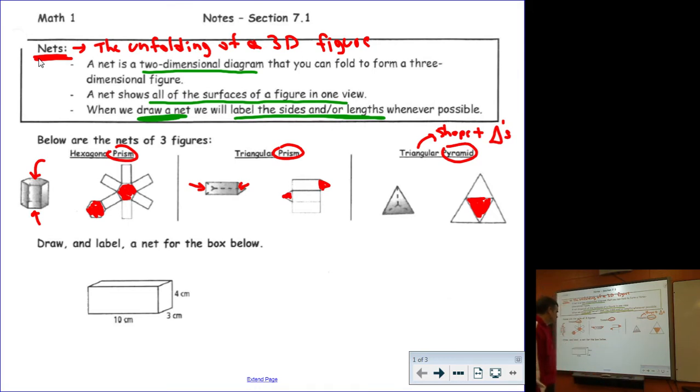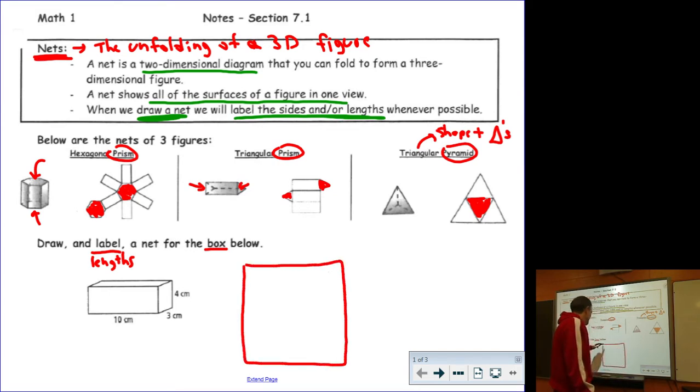We're going to draw a net for a box, which is really just a rectangular prism. We want to label the sides, meaning put the lengths in for each side in your net. This net should look something like this. I usually start by drawing the body of the box. This would be the box that is 10 centimeters long. What I've done is I've taken all four sides, not the ends, and unwrapped them into one big flat piece.